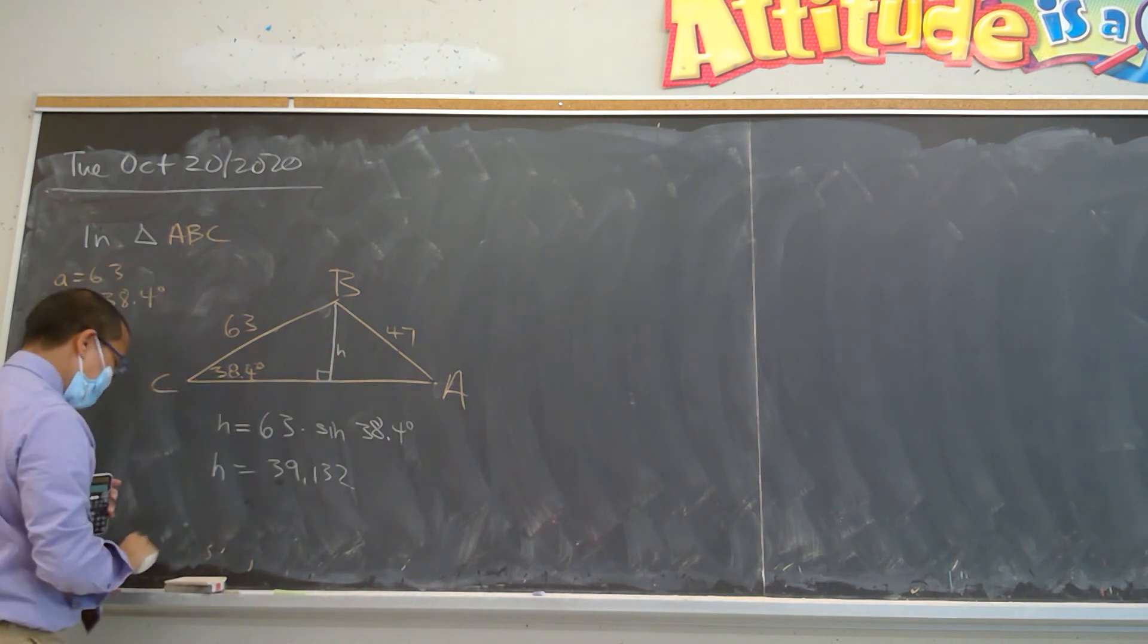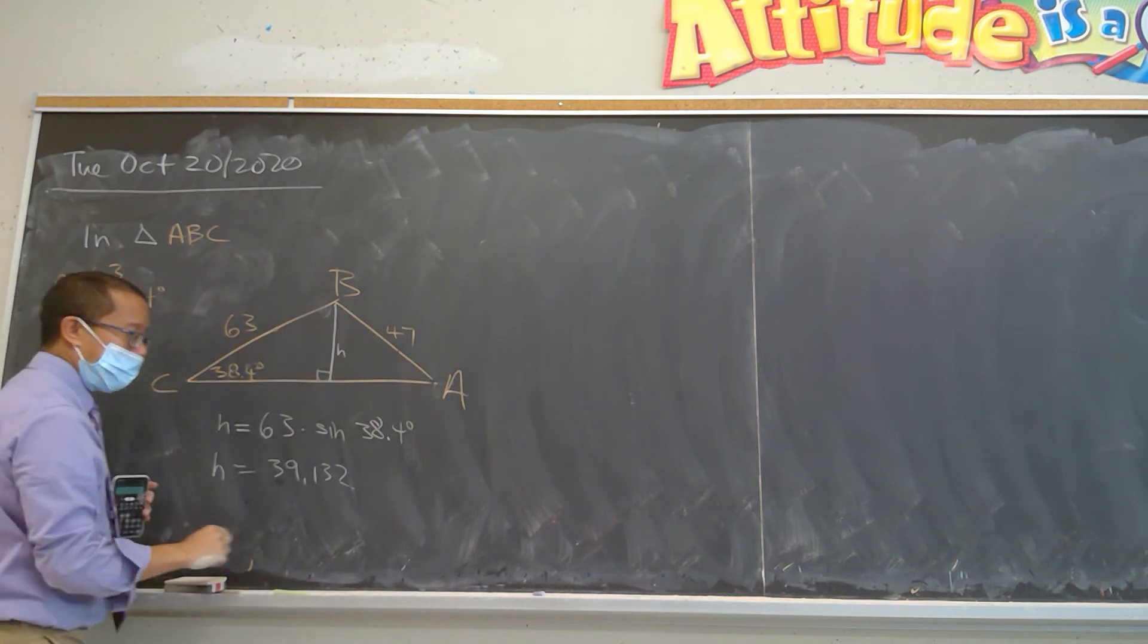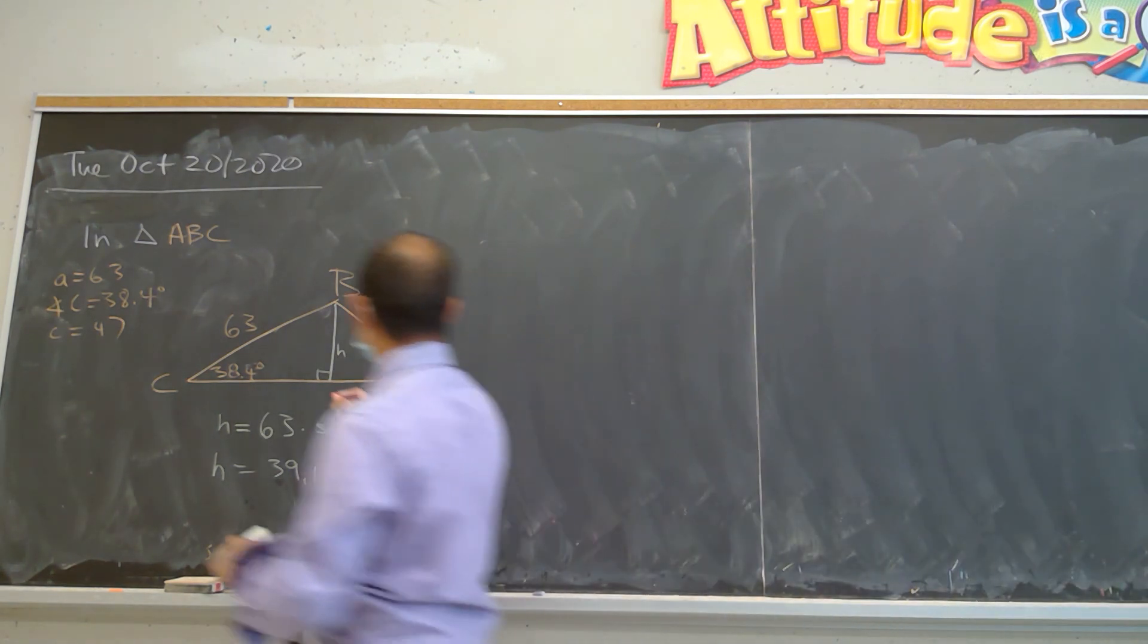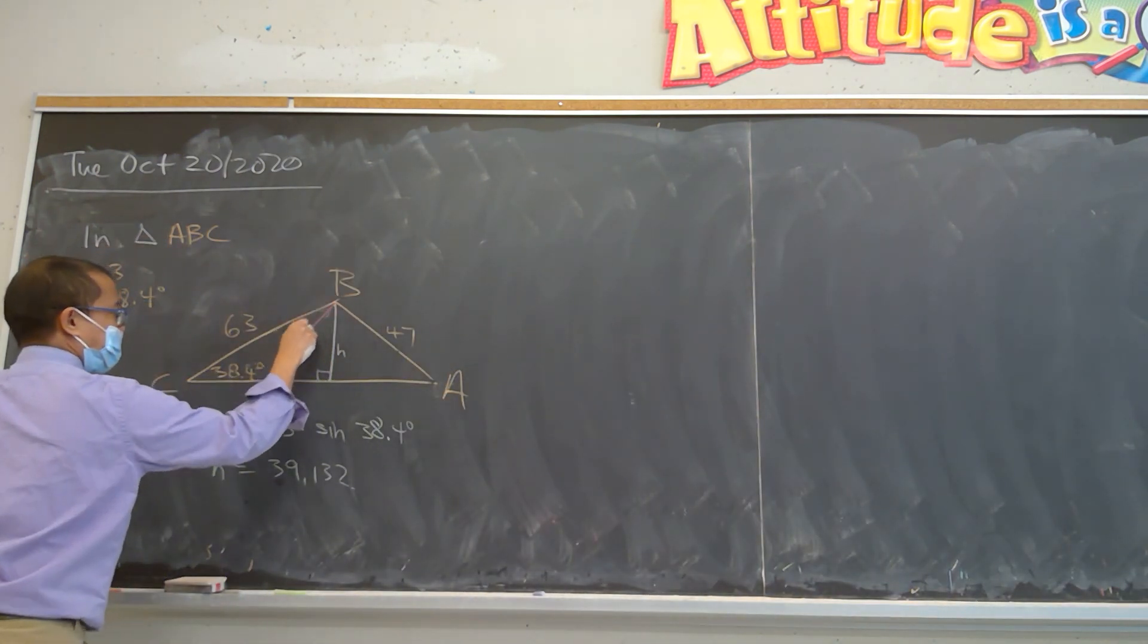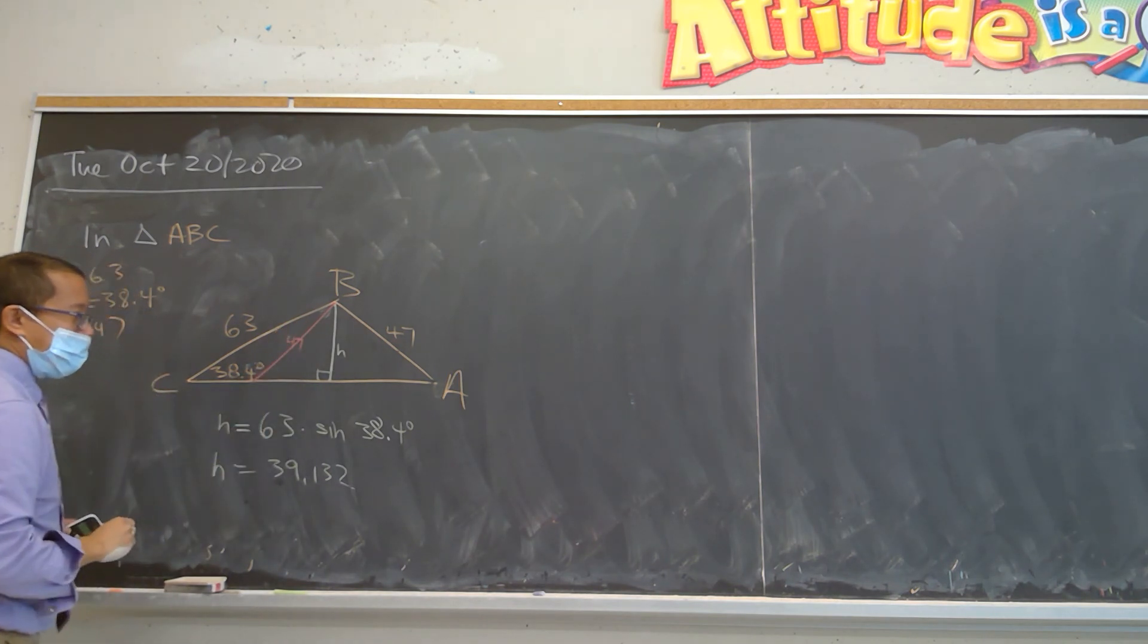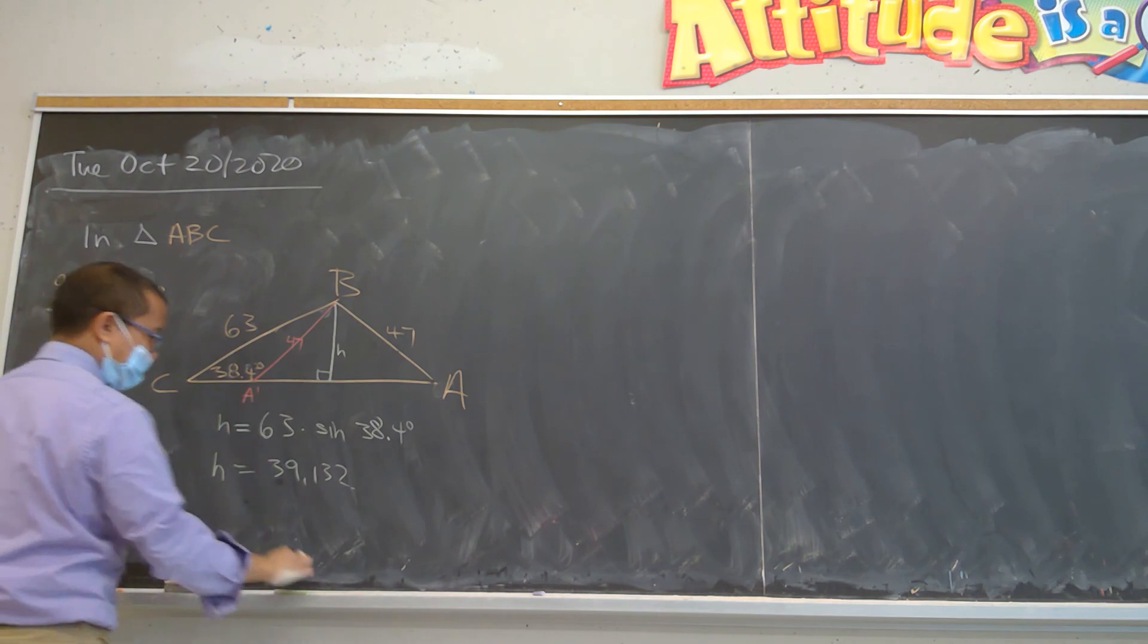...the side C can form an acute triangle or its obtuse one. We'll use red chalk here, like so. And it can swing.